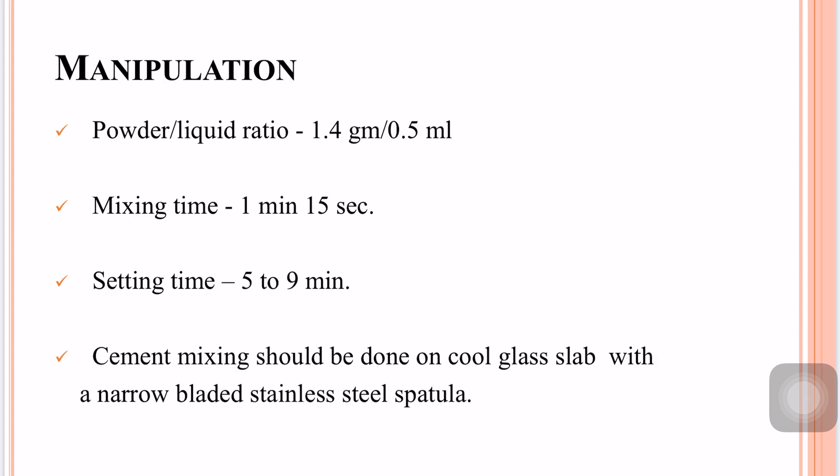In manipulation, the powder-liquid ratio plays a crucial role. It determines whether you are going for luting consistency or base consistency, depending mainly on powder and liquid content. For base consistency, the powder-liquid ratio is about 1.4 grams to 0.5 ml of liquid. The mixing time is 1 minute and 15 seconds, and the setting time is 5 to 9 minutes.